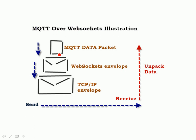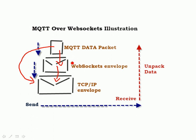And that's illustrated here in this diagram. If we had a normal MQTT connection, not MQTT over WebSockets, we take the MQTT data packet and place it straight into the TCP/IP packet. With MQTT over WebSockets, we take the MQTT data packet generated by our application and place it into a WebSockets envelope, then put that WebSockets envelope into a TCP/IP envelope. When we get to the other end, we unpack it in reverse order: take the TCP/IP envelope, unpack the WebSockets envelope, and from that unpack the MQTT data packet, and then unpack the actual data we're sending.